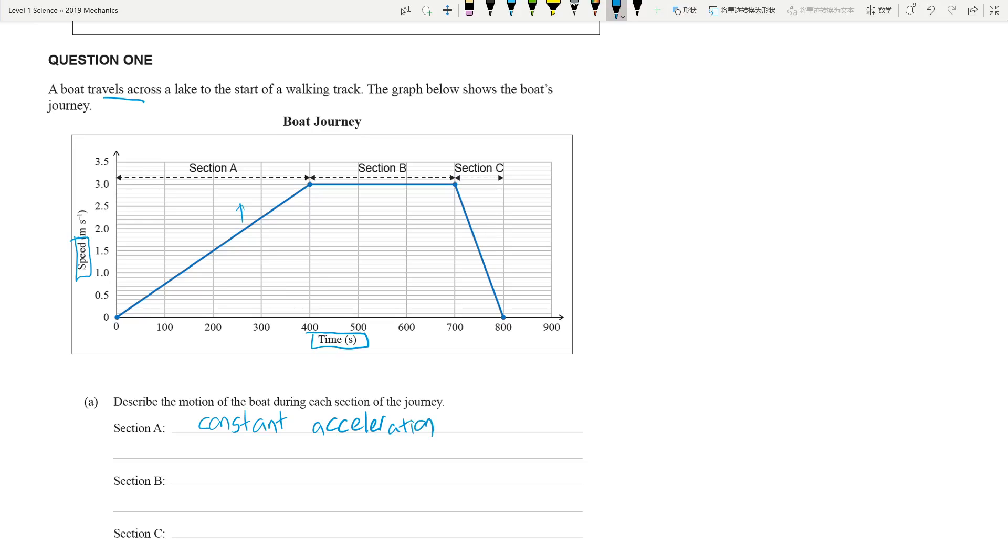If we look at Section B, you're going at three meters per second for 300 meters, this is constant speed. And if you look at the last one, which is constant deceleration. Now you can write this is constant speed at three meters per second, or constant acceleration for the first 400 meters like they did in the marking schedule. But this will be enough, this is an achieve question.